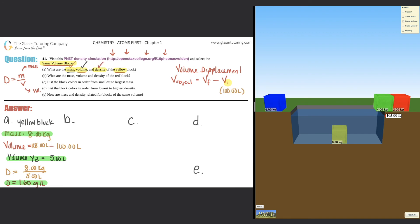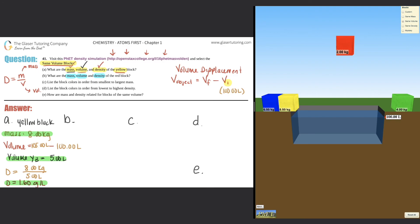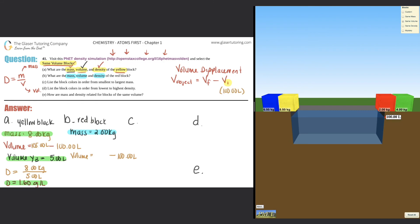Now for part B, they ask the same thing — mass, volume, and density — but for the red block. Take the yellow block out and use the red block. Lifting the red block shows it has a mass of 2.00 kilograms. For volume, we'll again use volume by displacement: final volume minus the initial of 100.00 liters.